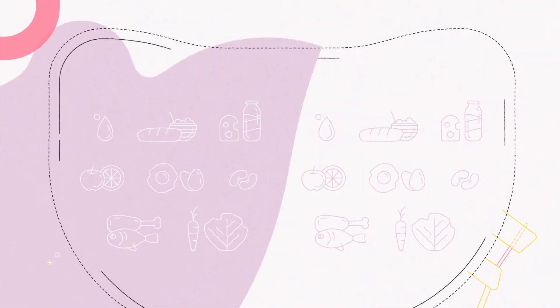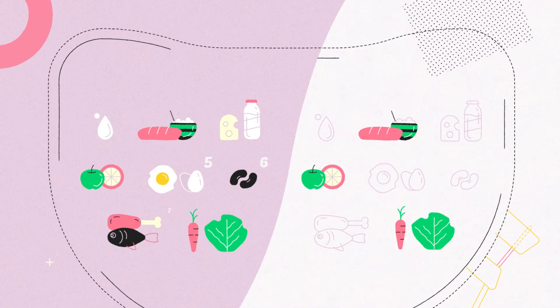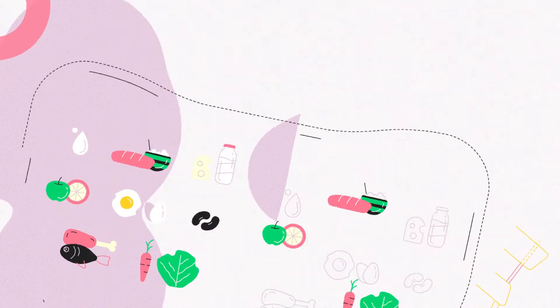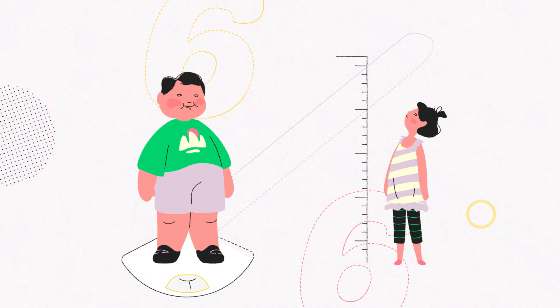Only half of the children from six months to two years of age receive food with minimum dietary diversity. 6% of children under age five are overweight. Another 6% suffer from stunting.